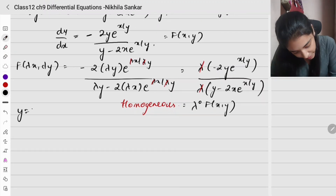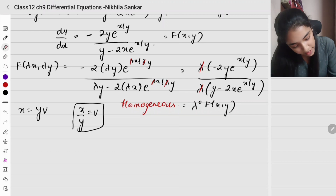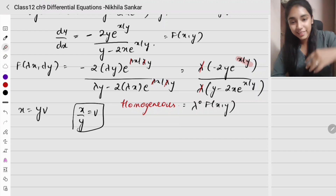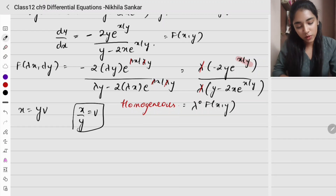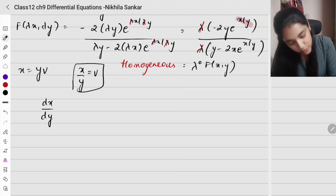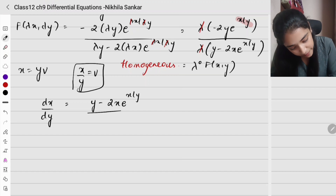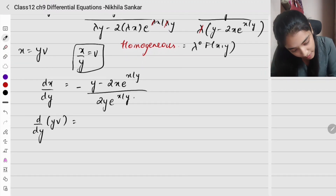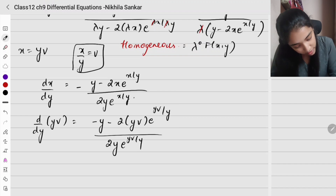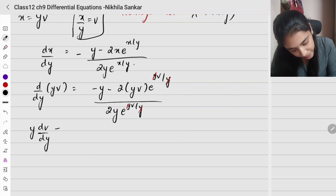Since we have x/y in the exponent, we use substitution x = yv. Differentiating: d/dy of yv equals minus y minus 2yv e^(yv/y), the whole divided by 2y e^(yv/y). The y's cancel in the exponent. Applying the product rule on the left side gives y times dv/dy plus v times 1.